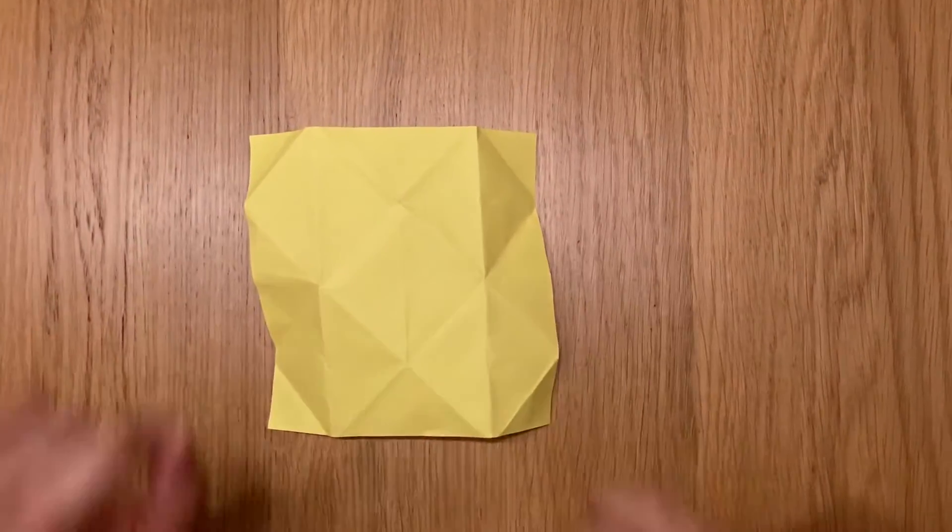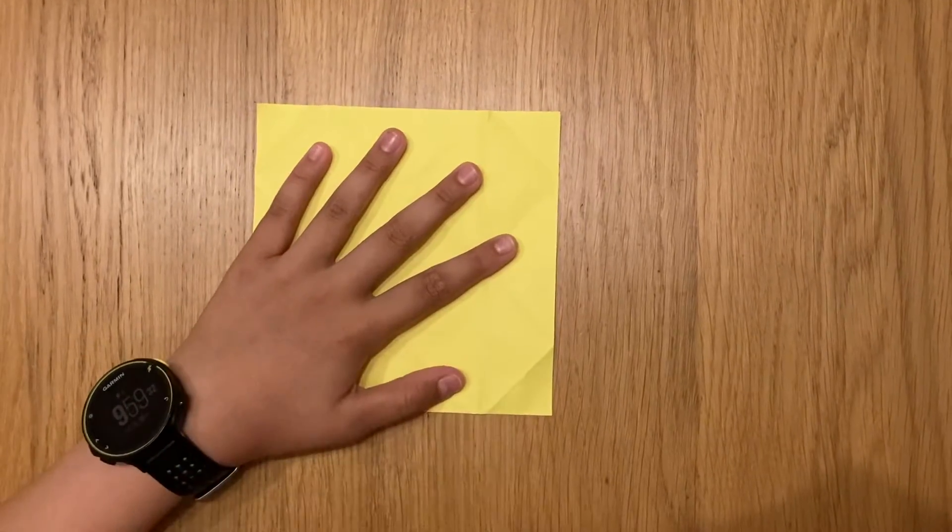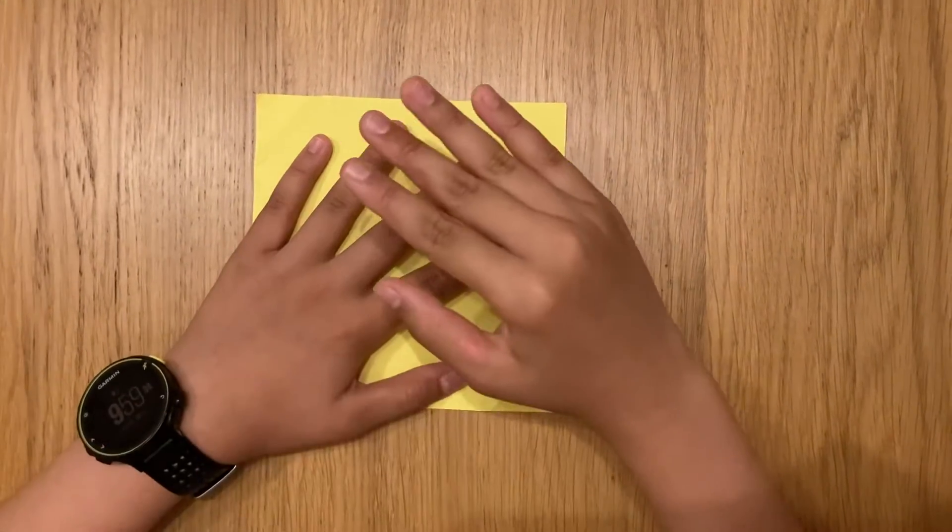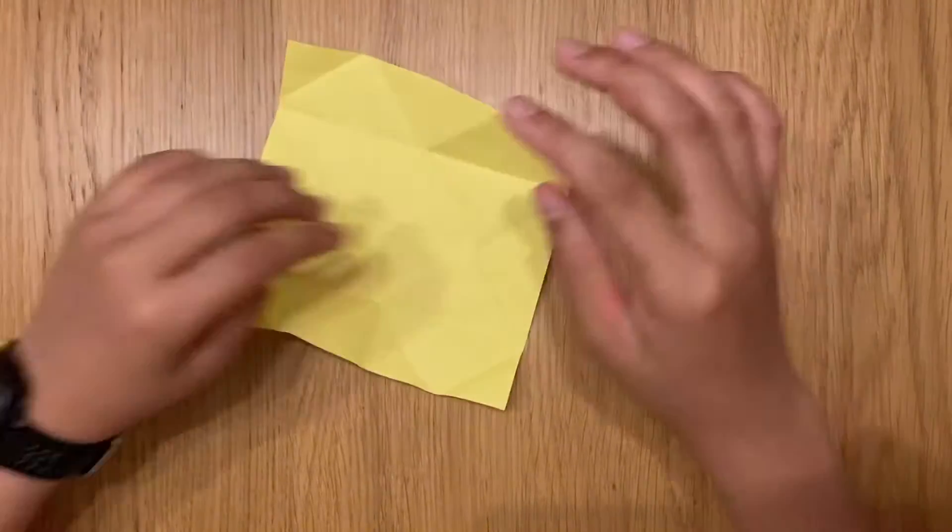First of all, you need six papers for a square, no matter what size paper it is. I always use 15 by 15, so let's get into it.